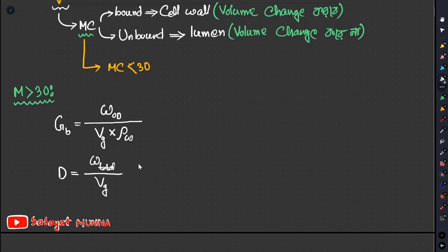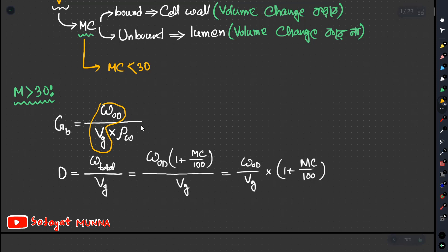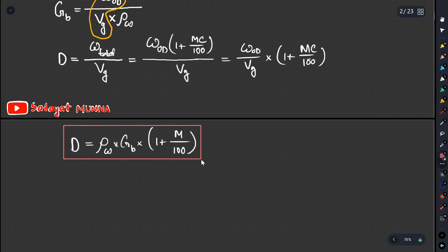We add moisture content. Moisture content will show what we are talking about. We will learn the formula. OD weight on top, divided by one plus moisture content divided by 100, and the bottom is VG. So now we will see that OD divided by VG into 1 plus MC over 100. So finally the formula: density eta equals ρw into Gb into 1 plus moisture content M divided by 100.